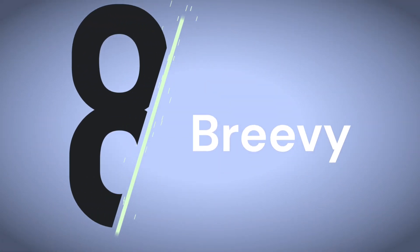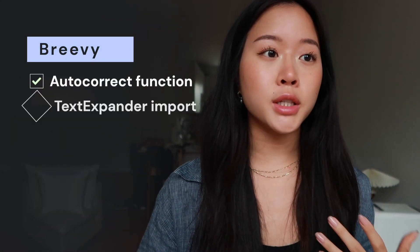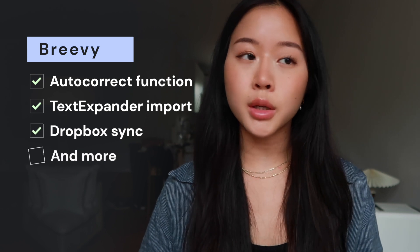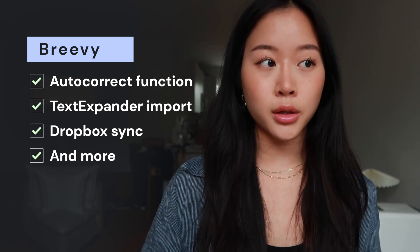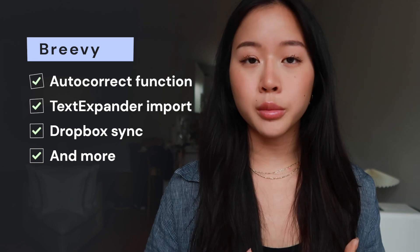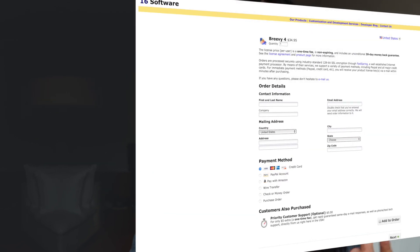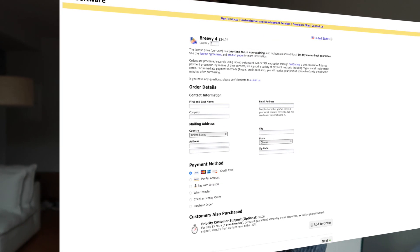And lastly, at number eight, we have Breevy. This is another straightforward text expander tool. They have a handy autocorrect function for tricky spellings, and there's also the option to import your shortcuts from TextExpander. Additionally, you can save snippets on all your computers using Dropbox. Breevy only works on Windows and you do have to pay a one-off fee for a license.